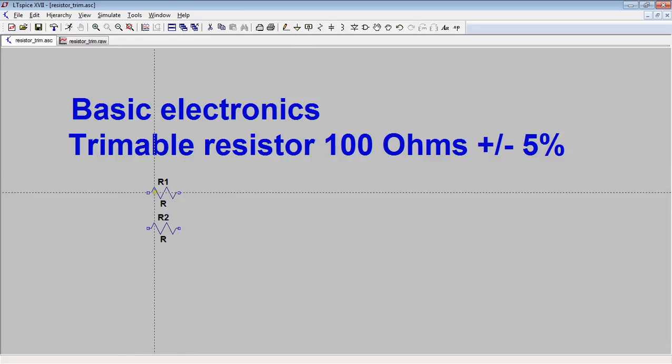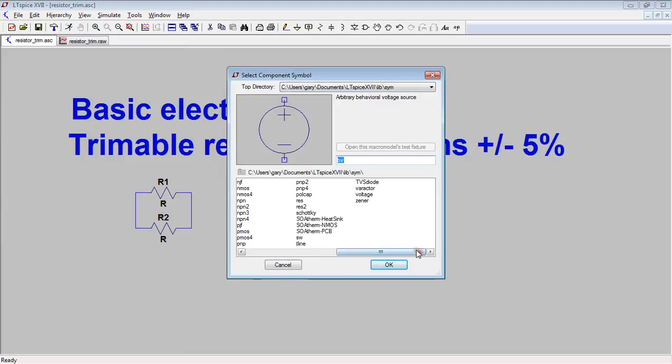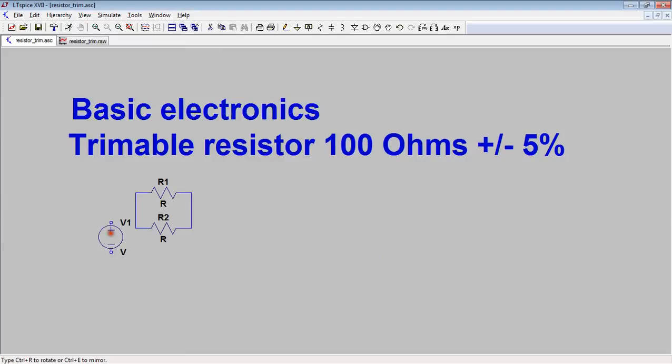LTSpice to try and work it out. So R1 and R2 connected in parallel, and then I'm going to have a voltage source that goes there and ground connection that goes there. So what does the two resistors need to be?